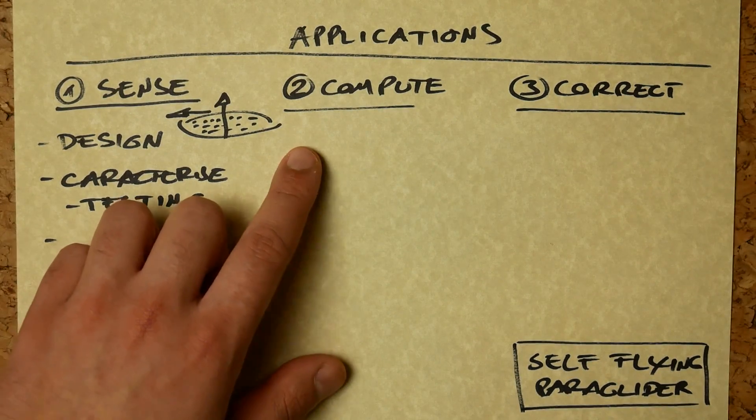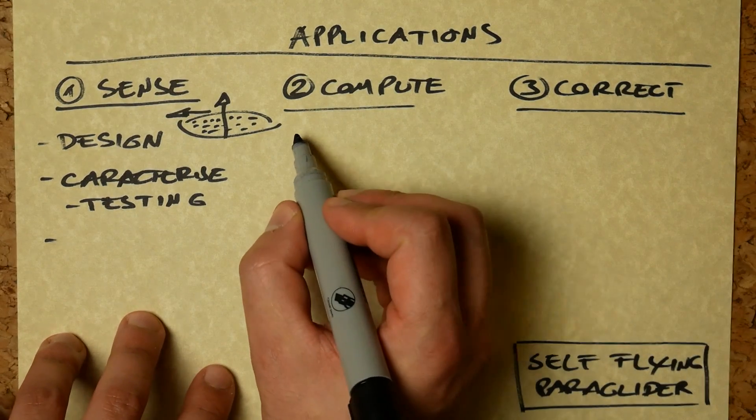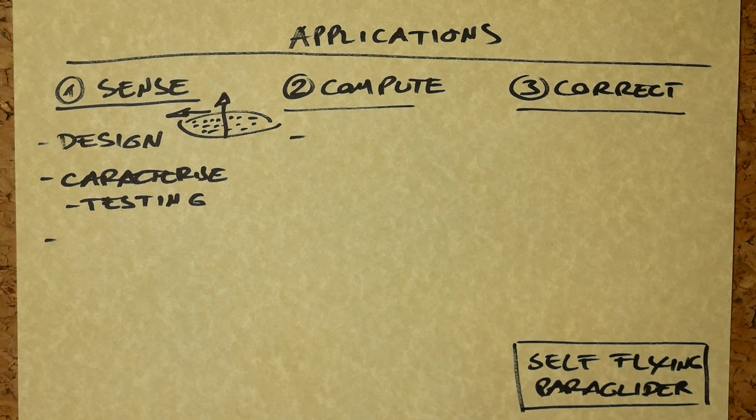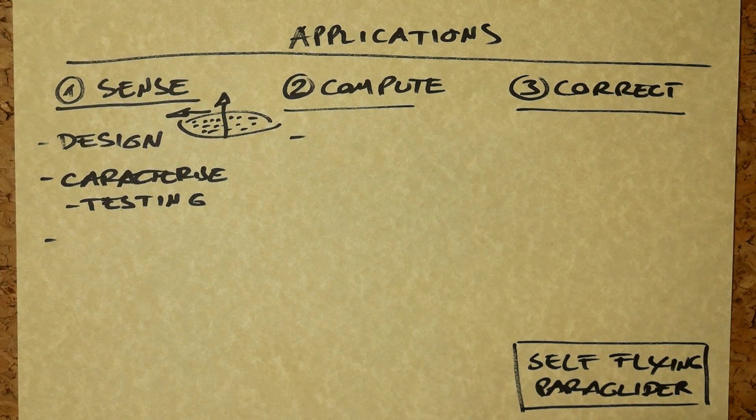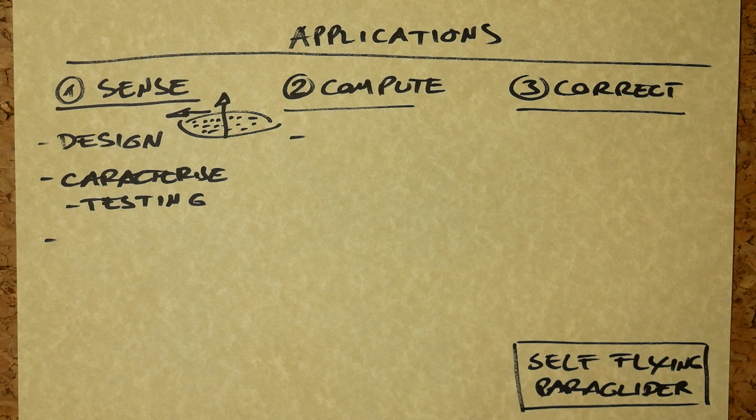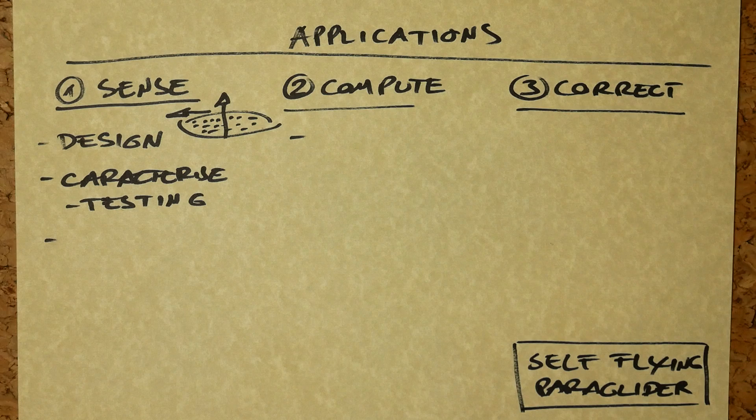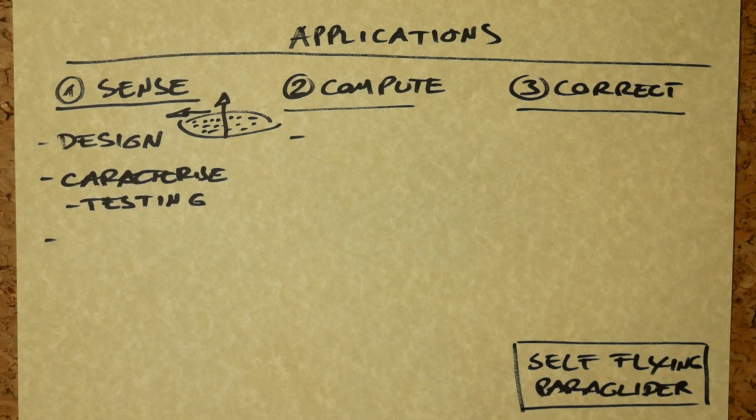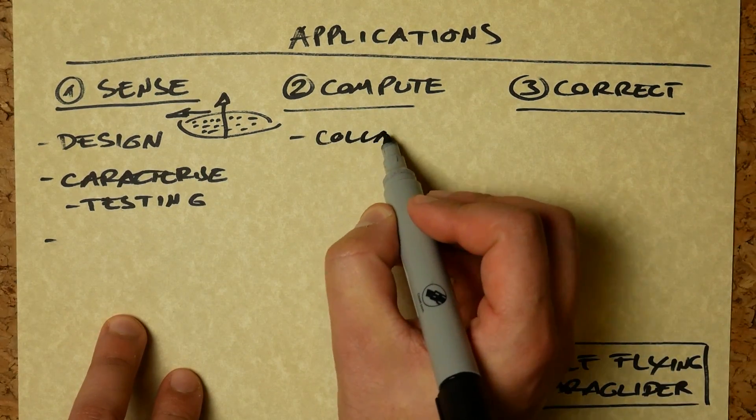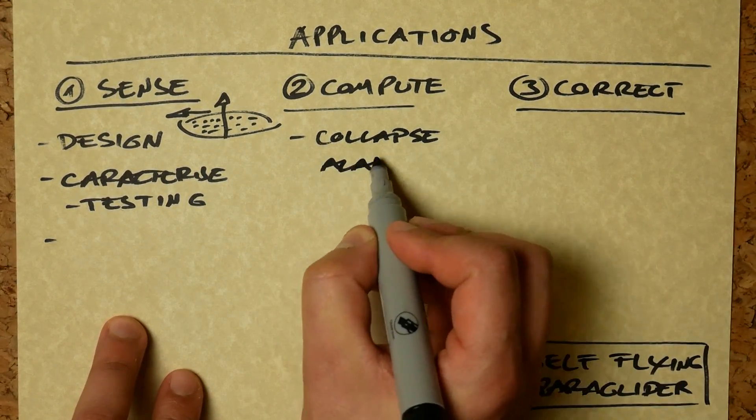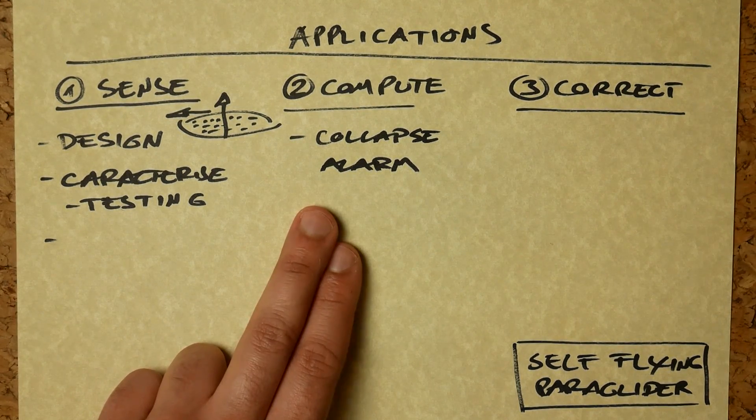So in computing, we can start looking to optimize how a paraglider flies. But also, if you think about your vario, your vario is basically sensing something that humans are very bad at. So fine barometric pressure differences. Humans are very bad at that. So the vario does that for you and it tells you if you're going up or down, which means you can go cross country. Otherwise it would be very difficult. So for this, for instance, you could have a collapse alarm where it doesn't do the correction for you but it might warn you if it thinks it's about to deflate.